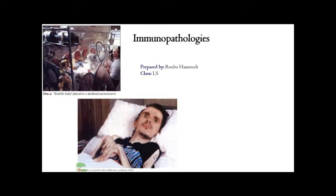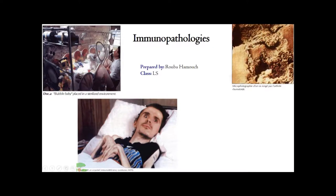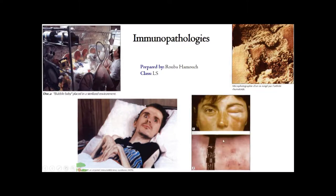In document A, we have a 'bubble baby' placed in a sterilized environment due to the presence of congenital immunodeficiency — immunodeficiency present since birth. These babies must be placed in sterilized environments to protect them from opportunistic infections. Another document shows a patient with acquired immunodeficiency syndrome, or AIDS, caused by the HIV — human immunodeficiency virus. We also see rheumatoid arthritis as an example of autoimmune disease, and two examples of allergies.